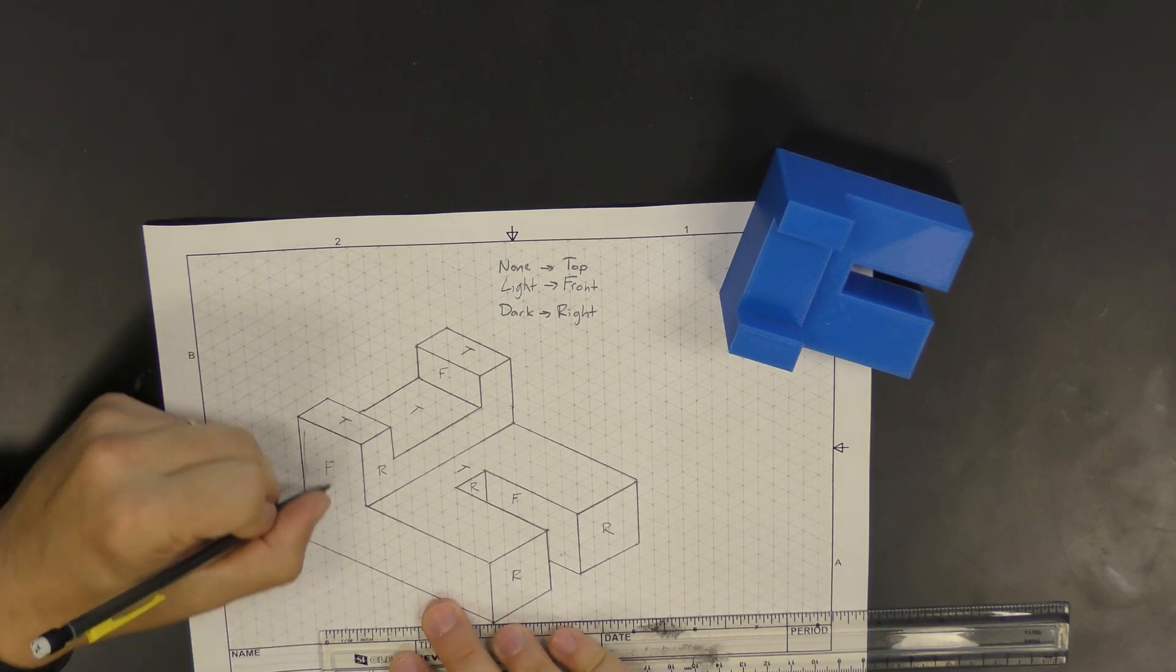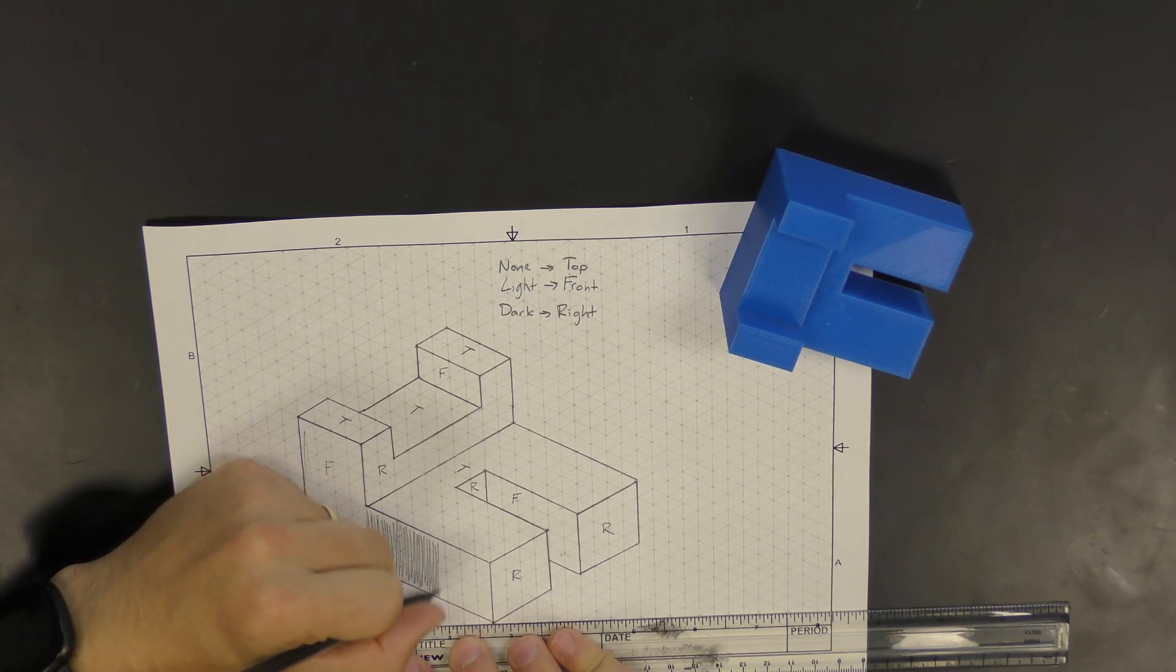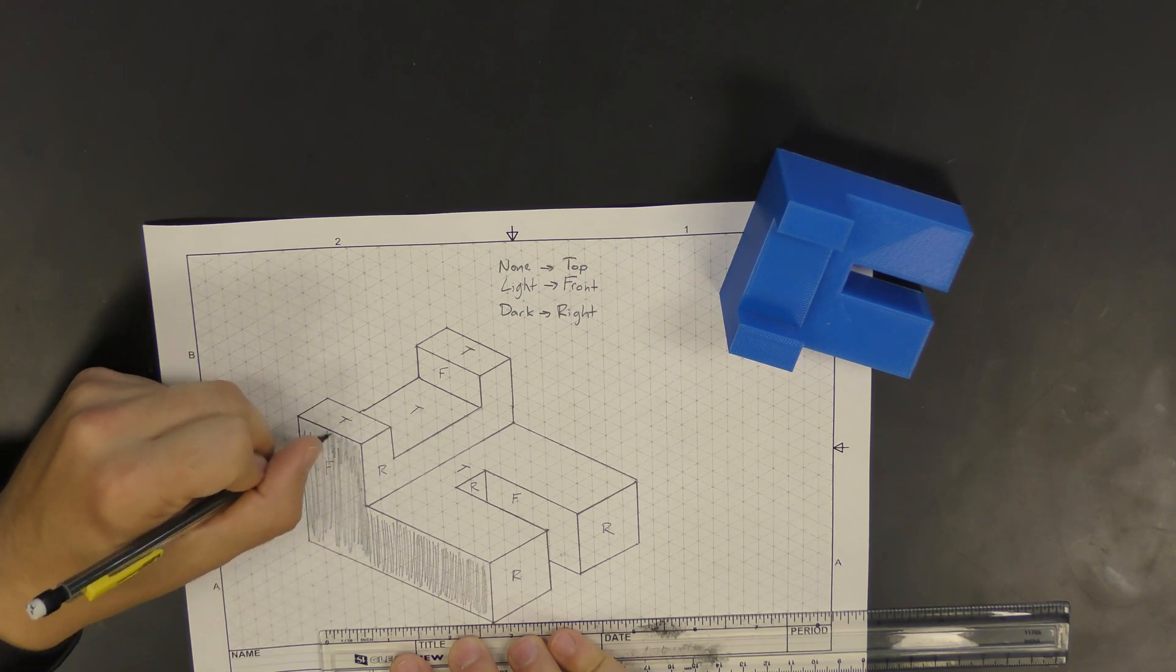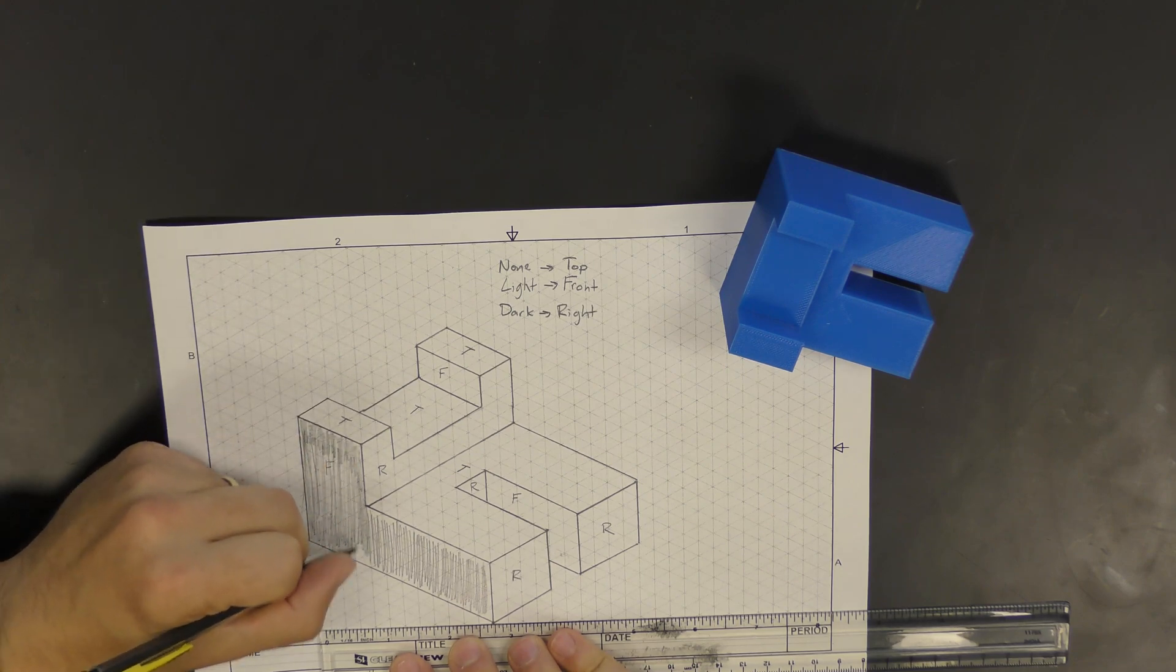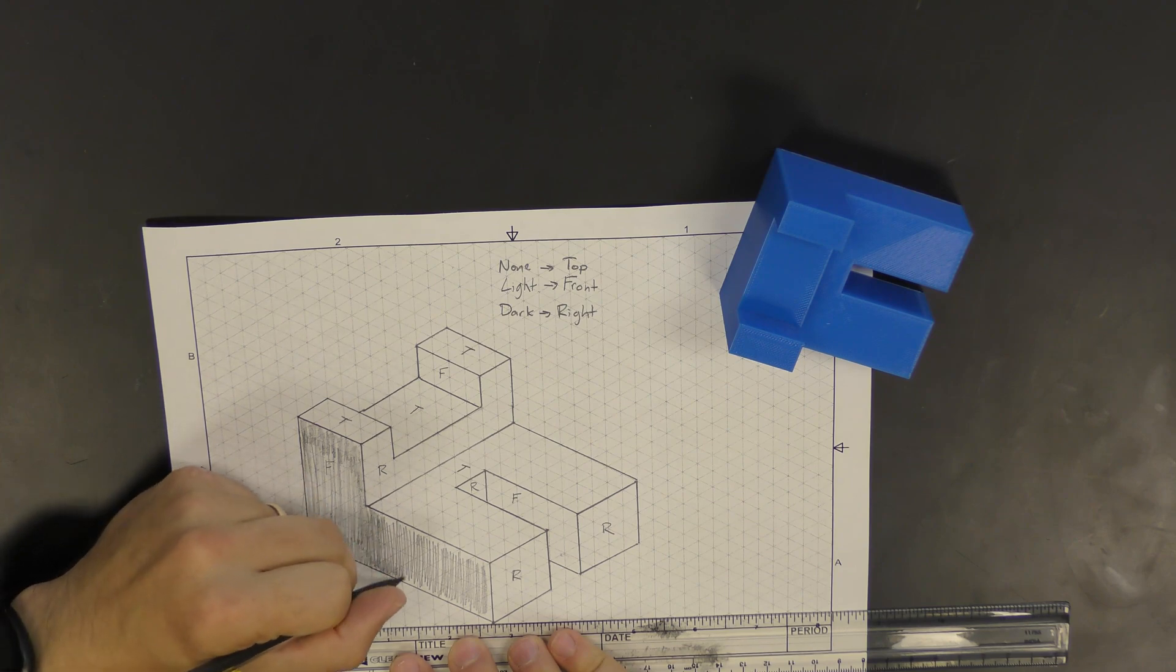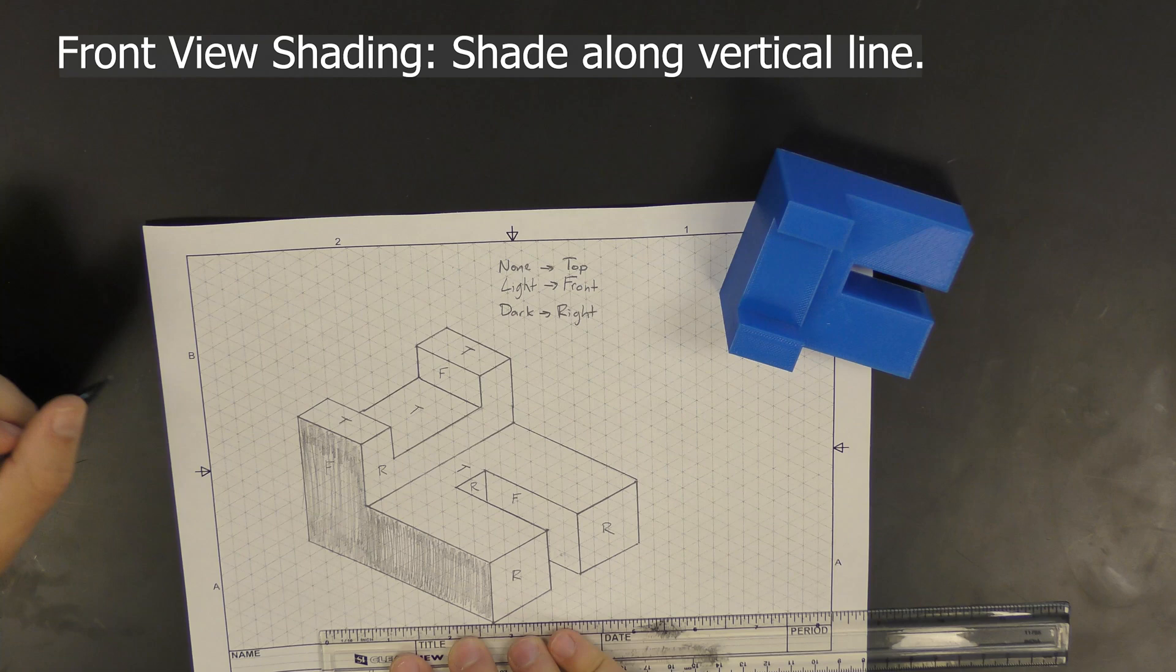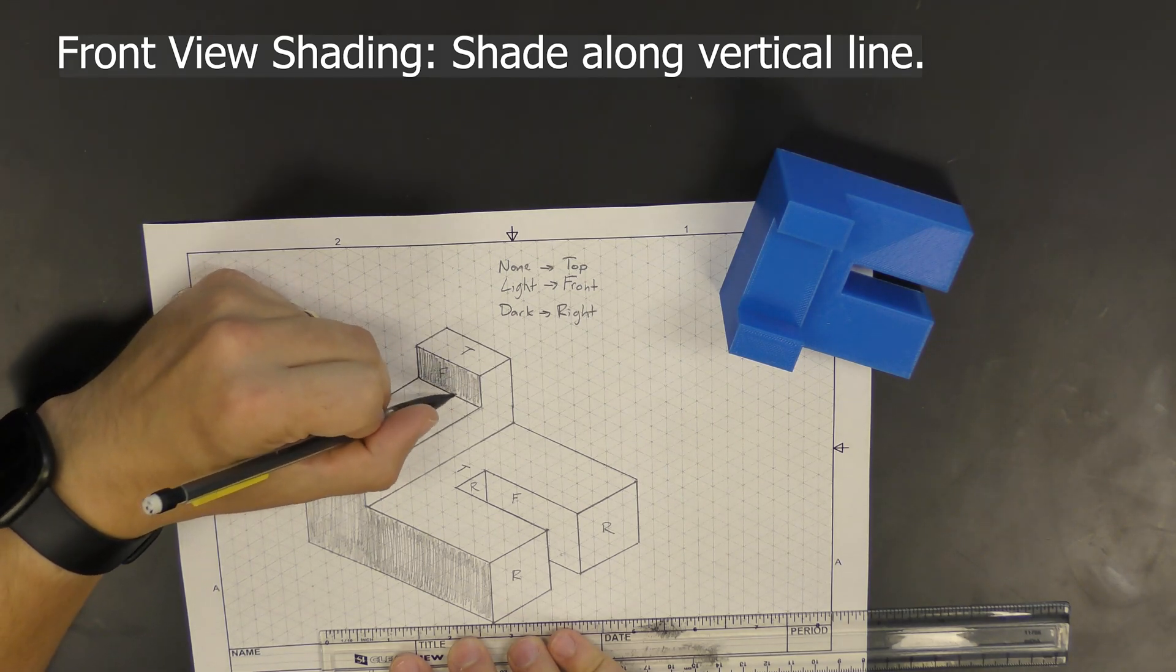Then I went through and applied my shading. For the front view, we're going to apply our shading vertically along that height line. And we're going to do that for every face that is facing the front. Note that there's even one that's in between the C-shape on the side, and there's one on the back of the shape at the top.